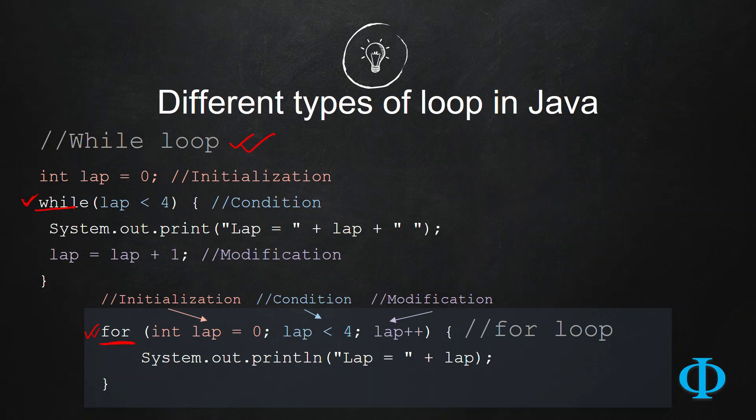Compared to while loop, just remember the different parts of a loop as we have discussed: there are three different parts - initialization, condition, and modification. In while loop, initialization is done in one line, condition in another line, and the modification part in another line of code.